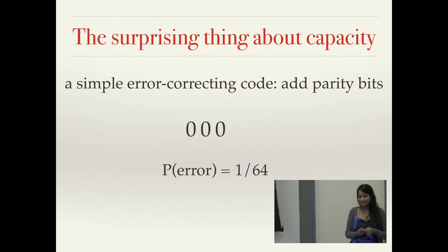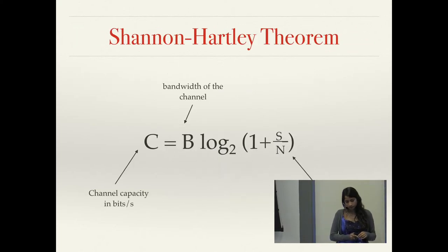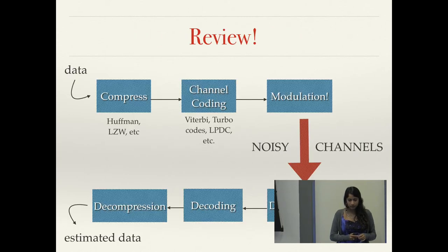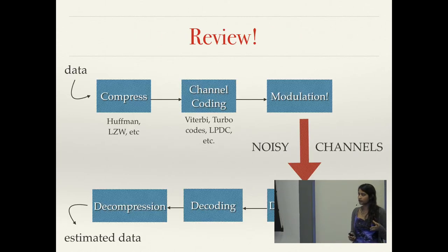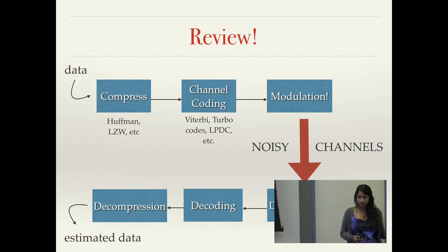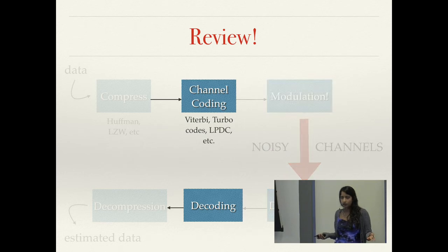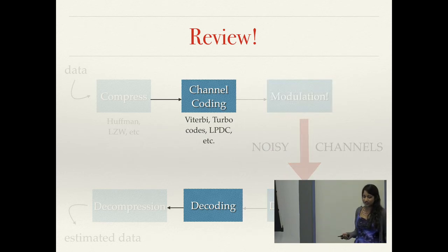So returning to this diagram, we've talked about the major conclusions that this paper put forward — information content of messages, compression methods, the ultimate limit of lossless compression, modeling noisy channels, and the capacity of that channel. Now we can get to channel coding.